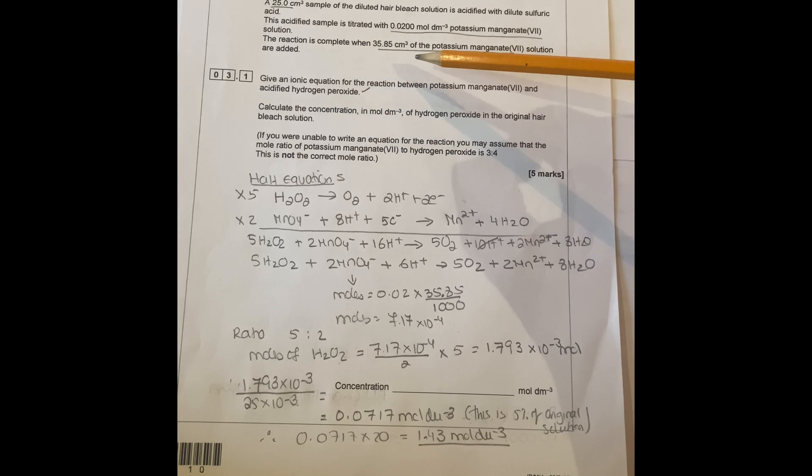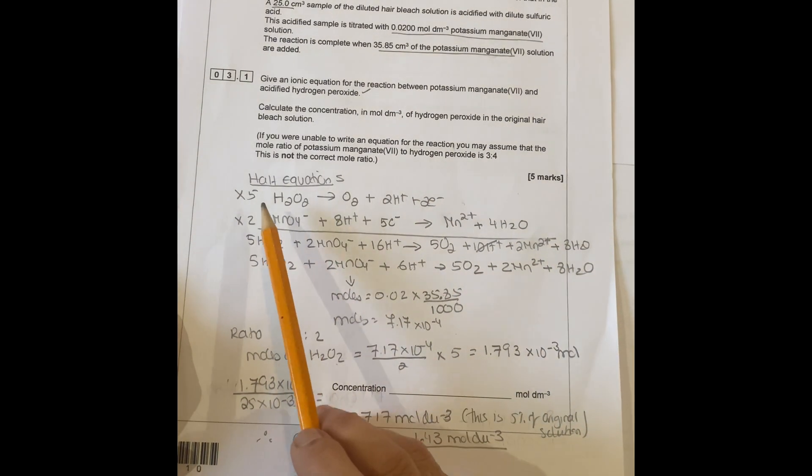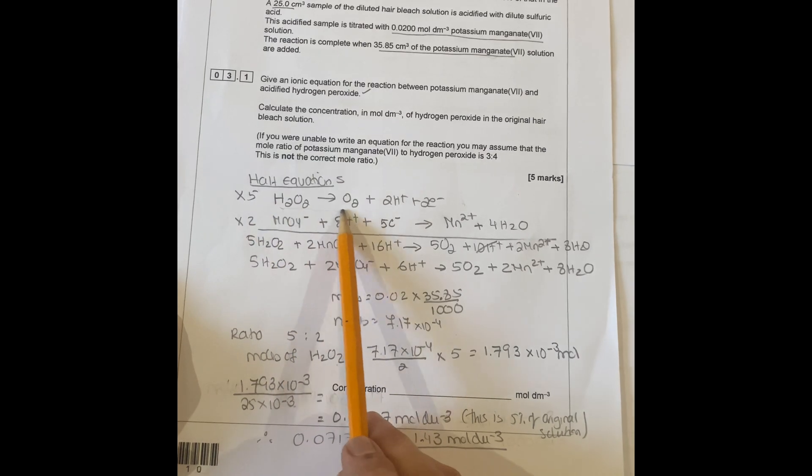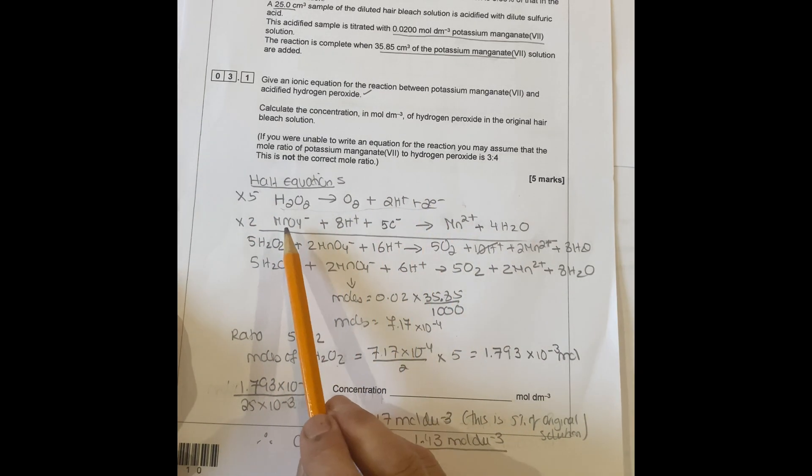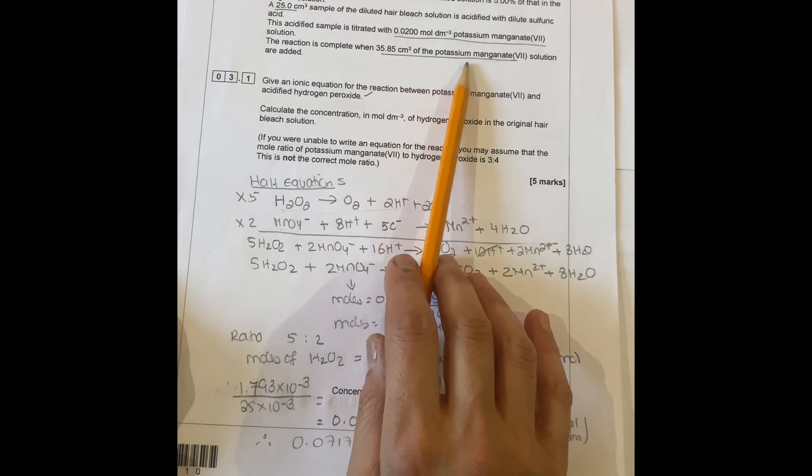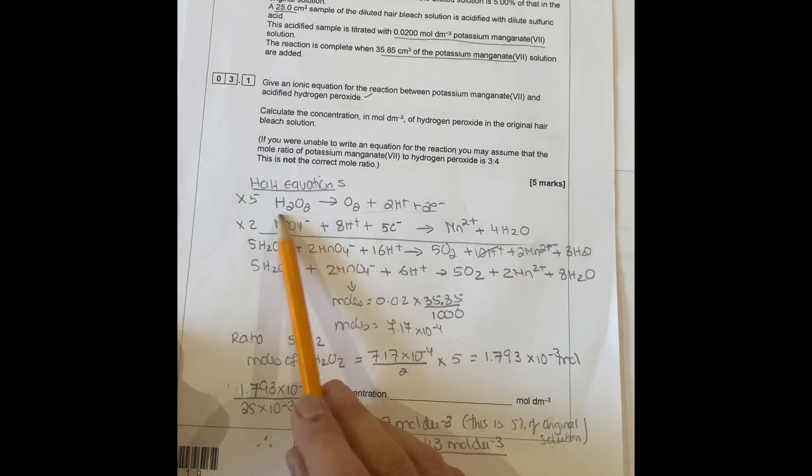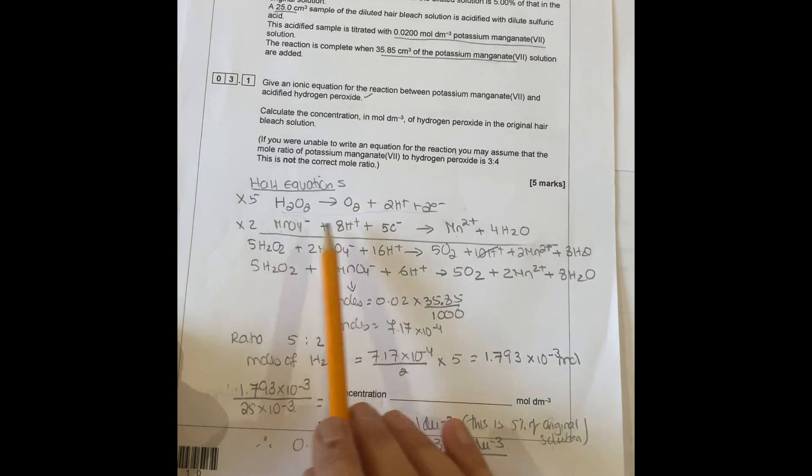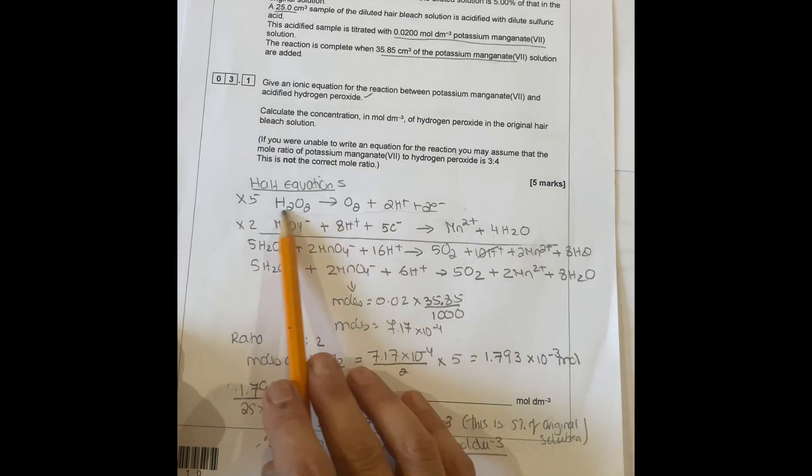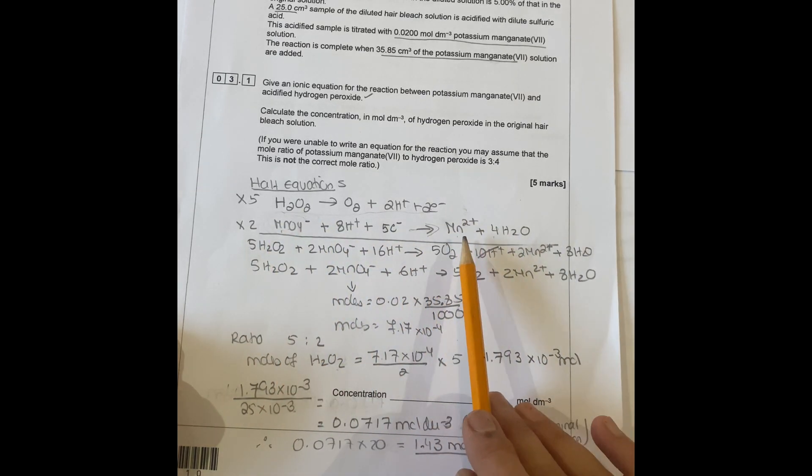The reaction is complete when 35.85 centimeters of potassium manganate solution is added. The first thing you've got to do is give an ion equation for the reaction between potassium manganate and acidified hydrogen peroxide. You've got a half equation which is this one here. You need to know the other half equation for potassium manganate seven solution. You start with MnO4- and arrow to Mn2+, then you balance the half equation.